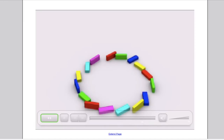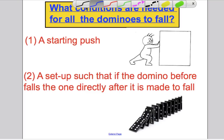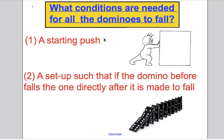Hopefully with a bit of thought, you may come up with the following ideas. In order for all the dominoes to fall, you had to push the first one — give the first one a little nudge for it to fall. Then all the dominoes were set up in such a way that they were close enough to each other so that if the one before it fell, it would touch the one after it and that one would fall. So there were two conditions for all the dominoes to fall, and these are the conditions we're going to use for induction.